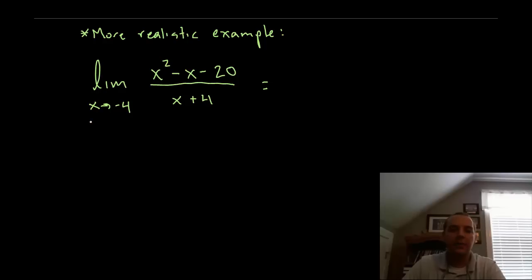We have the limit as x approaches negative 4 of the quantity x squared minus x minus 20 divided by the quantity x plus 4. I take my tip from above and say let me just try to evaluate this at negative 4, and you'll notice that you get 0 over 0. I'm not going to give up on this yet. I'm not going to look at that and say the limit doesn't exist. I got division by 0, let me go to the next problem.